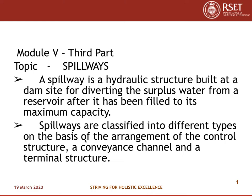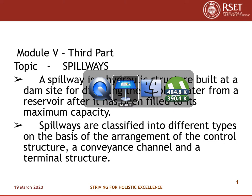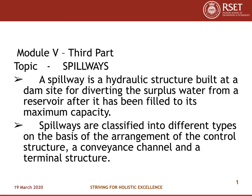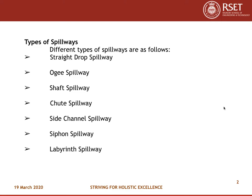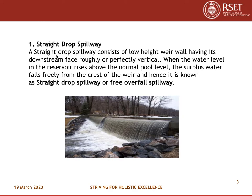Spillways are classified into different types on the basis of the arrangement of the control structure, a conveyance channel, and a terminal structure. The list of different types of spillways includes: straight drop spillway, ogee spillway, shaft spillway, chute spillway, side channel spillway, siphon spillway, and labyrinth spillway. Now let us look into these different types of spillways.